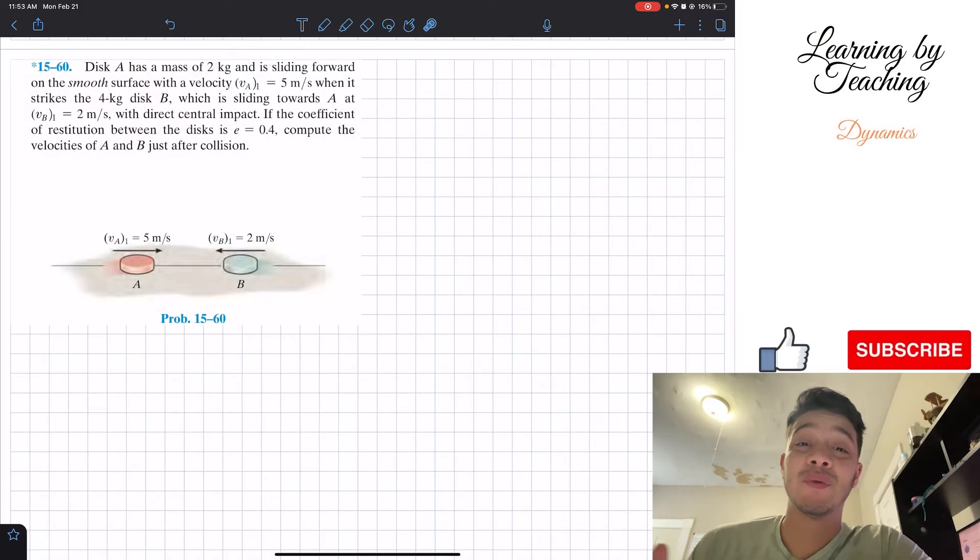Welcome back everyone to Learn by Teaching. Today we're in Dynamics and we're going to solve problem 15.60. It says, disk A has a mass of 2 kilograms and it's sliding forward on the smooth surface with a velocity VA1 equals 5 meters per second. When it strikes the 4 kilogram disk B, which is sliding towards A at VB1 equal to 2 meters per second with direct central impact, if the coefficient of restitution between the disks is E equals 0.4, compute the velocities of A and B just after the collision.